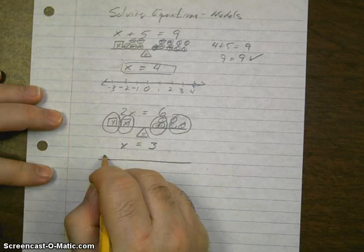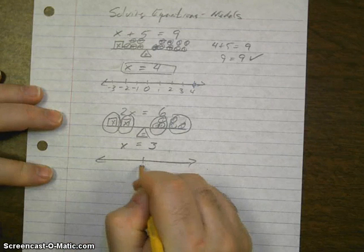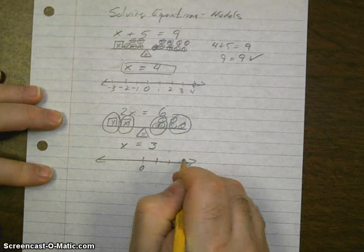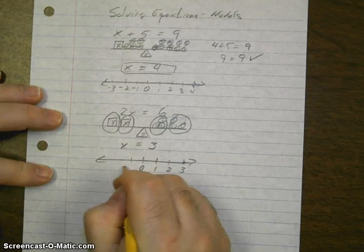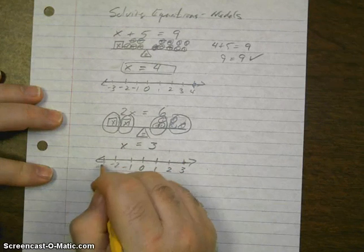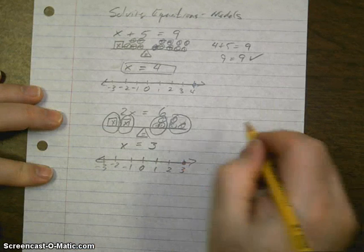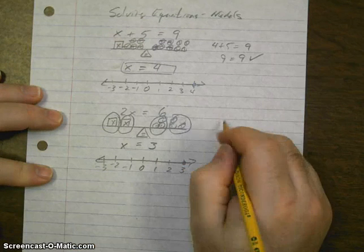On the model, 0, 1, 2, 3. Negative 1, negative 2, negative 3. There is our model to check the answer.